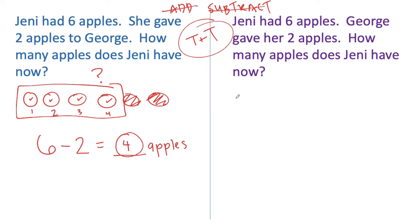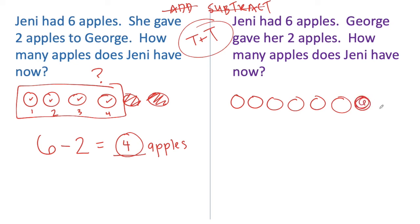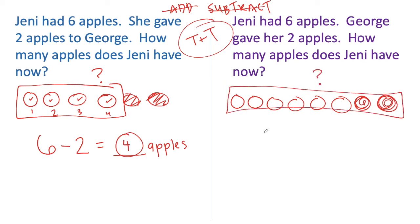Let's draw a model to match the purple story. Jenny had six apples — one, two, three, four, five, six apples. George gave her two more apples. The apples that George gave her are not a part of the apples she already had — we're joining the apples George gave her with the apples she already had. How many apples does Jenny have now? Jenny has the apples she already had and the apples that George gave her, and that's what we don't know. Let's write a number sentence: Jenny had six apples, George gave her two more — we have six and two more, and that's what we're trying to figure out.